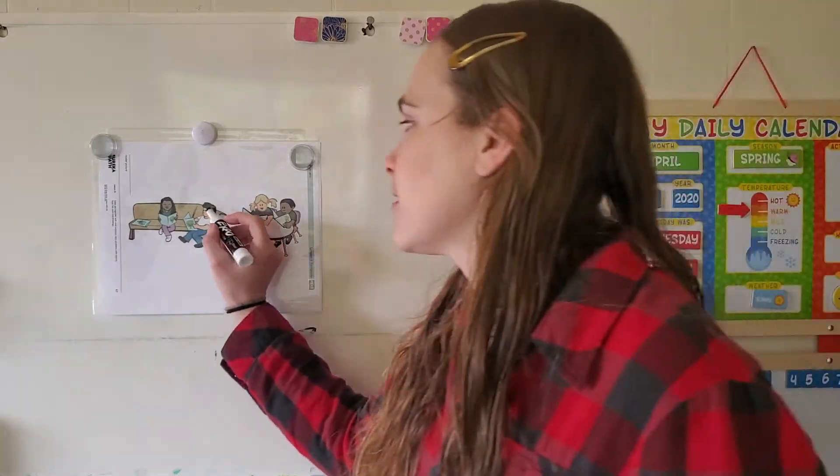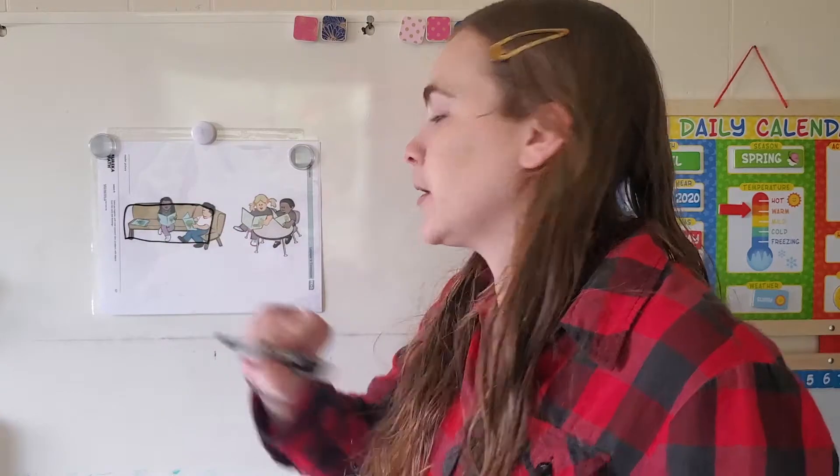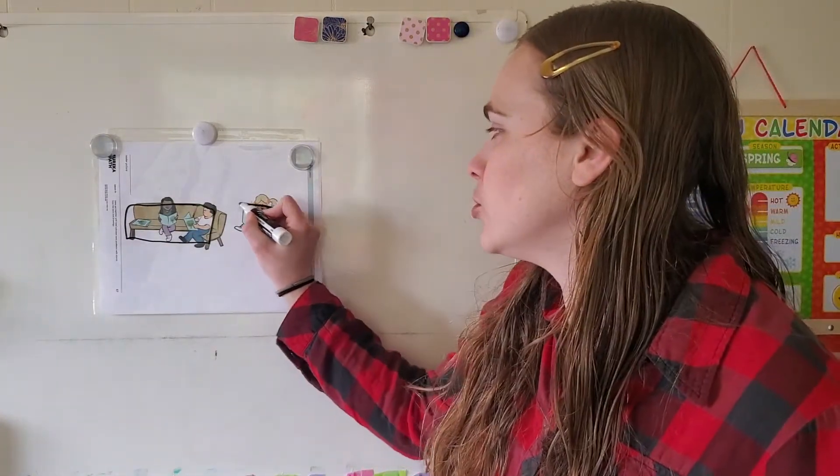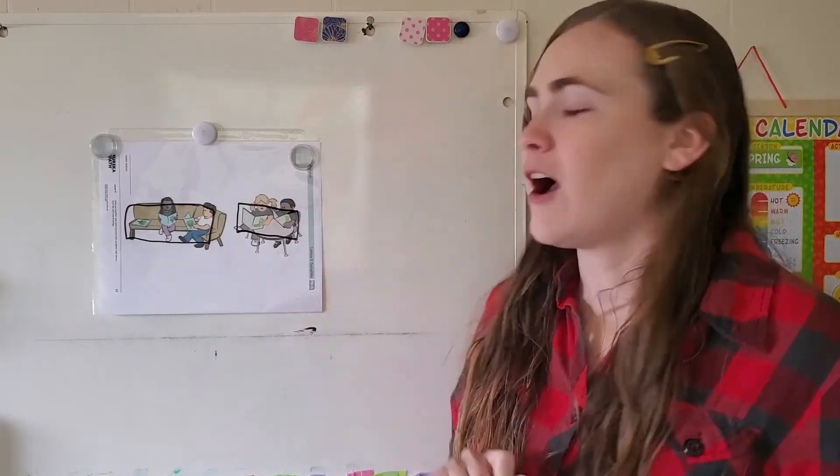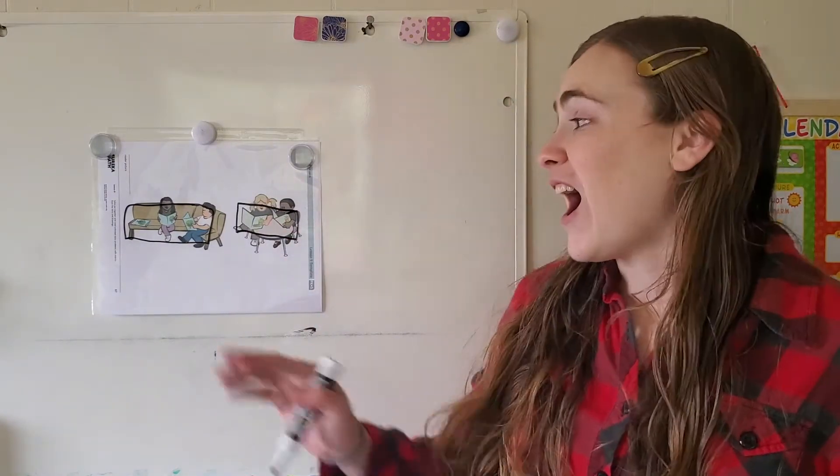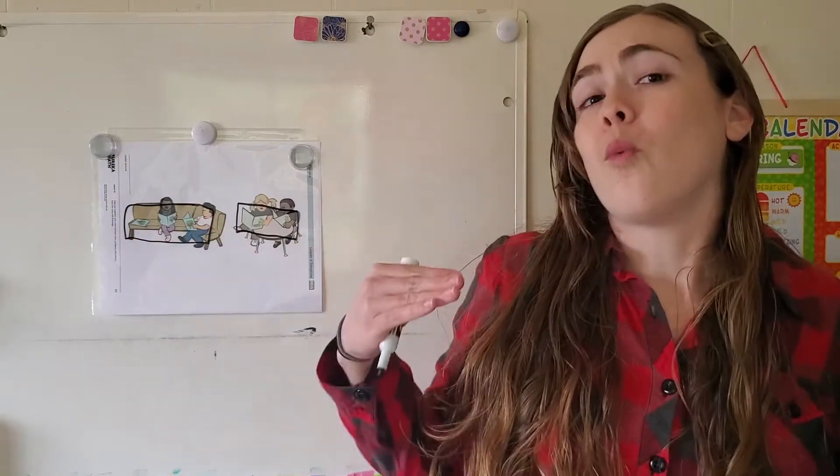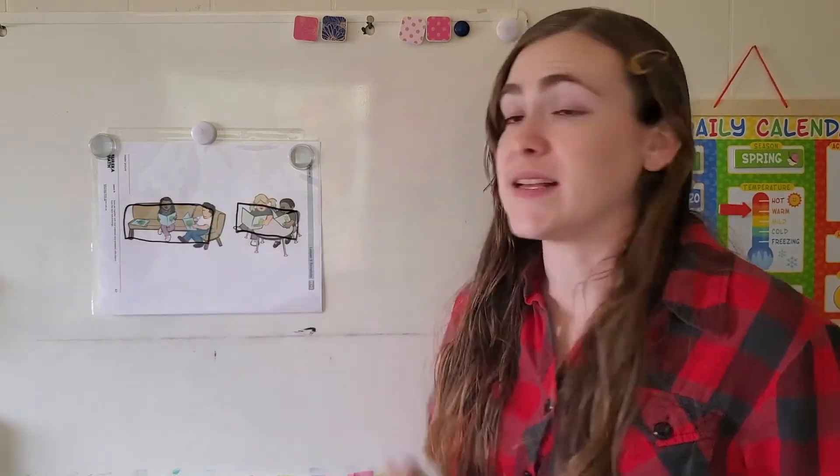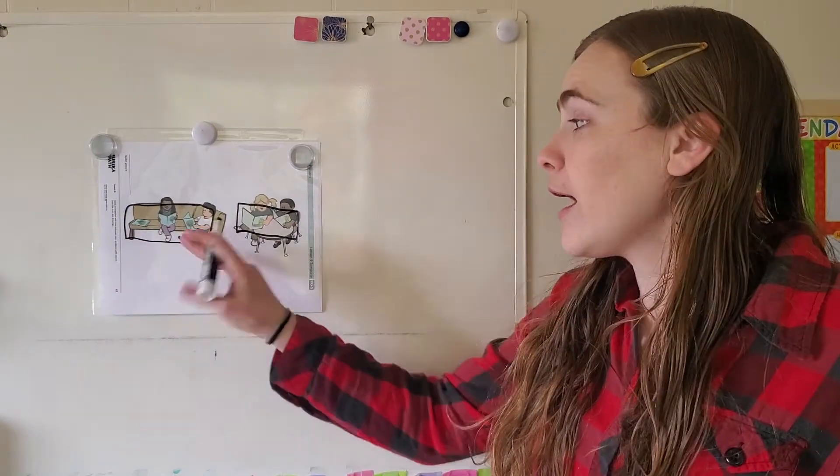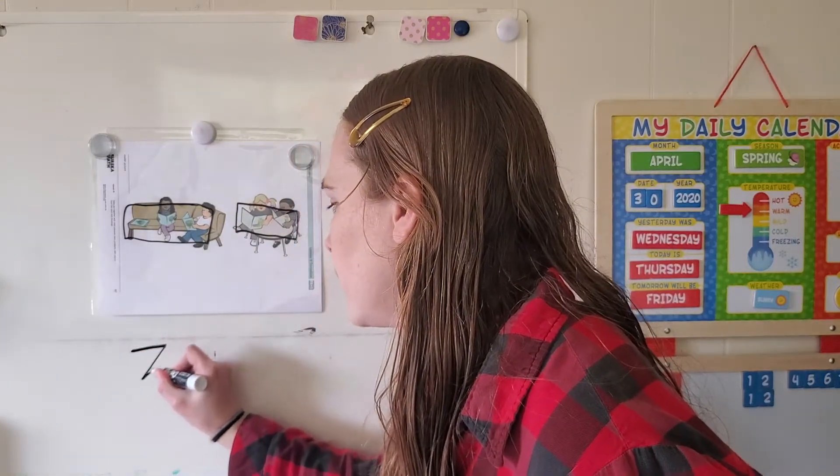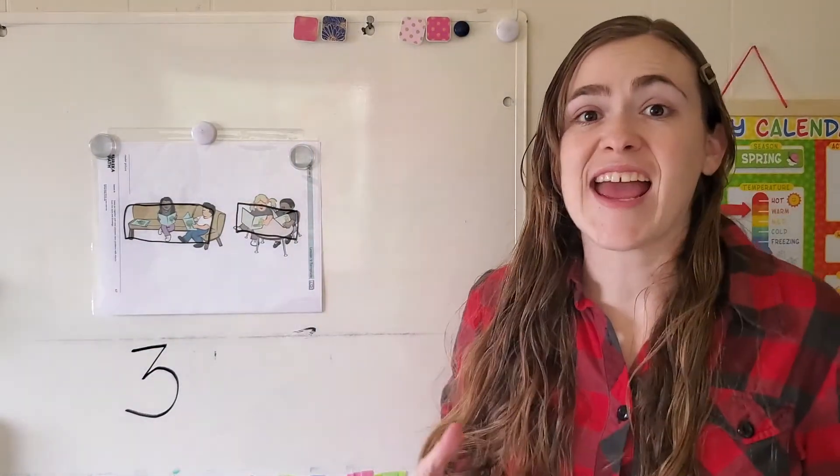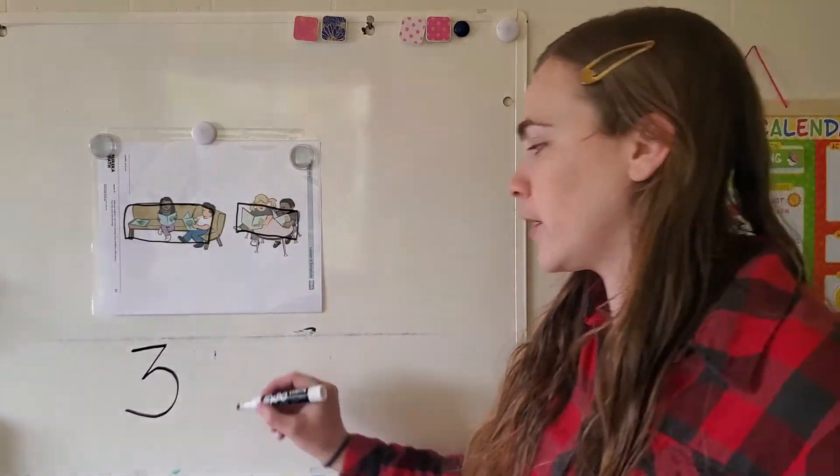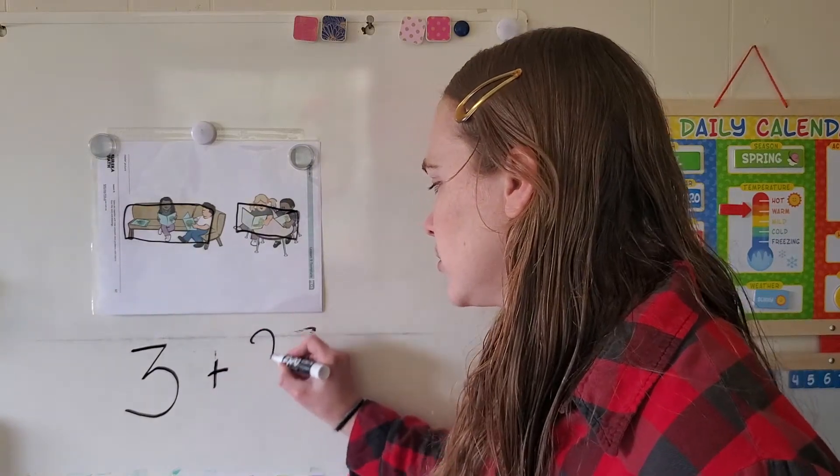First, I said that there are three copies of Chicka Chicka Boom. Then I said that there are two copies of the Very Hungry Caterpillar. I am boxing these to know what numbers I need to write down. Since there are three copies of Chicka Chicka Boom, I'm going to write three.